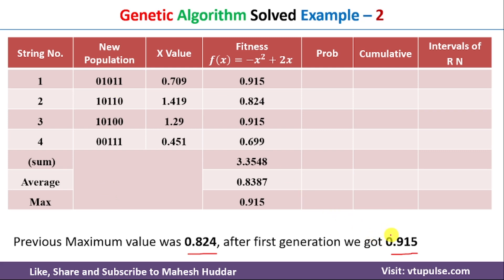To further increase the fitness score, we repeat the process: calculate probabilities, cumulative probabilities, random number ranges, select chromosomes, and apply crossover. This process is repeated n number of times until we obtain the maximum value for the function. In this video I have shown one generation of a genetic algorithm applied to the problem. I hope the concept is clear. If you liked the video, please like, share, subscribe, and press the bell icon for regular updates.